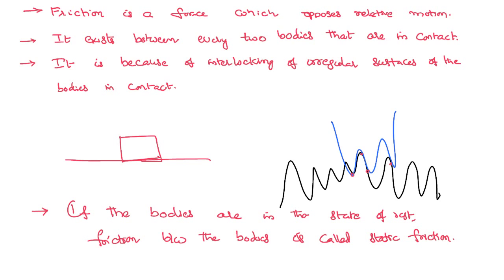If these bodies are in the state of rest, there will be better interlocking between the body surfaces because there is a lot of time for the surfaces to get interlocked. This kind of friction that exists between two bodies in the state of rest is called static friction. If the bodies are in the state of motion, the friction between them is called dynamic friction or kinetic friction. Since at least one body is in the state of motion, there is not enough time for the interlocking of one surface over the other. Therefore there will be less friction.